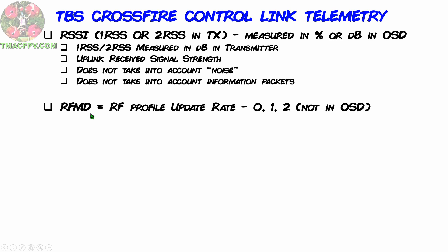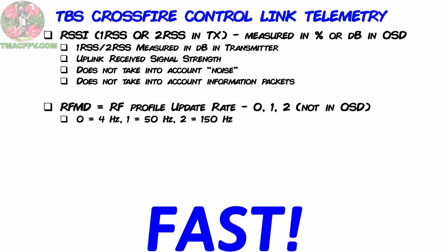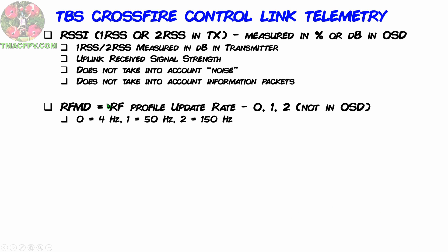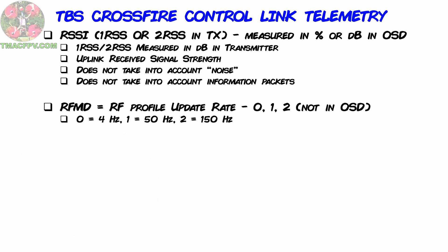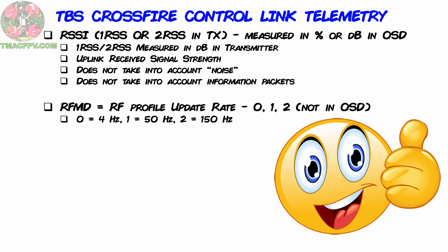RFMD is a Crossfire telemetry value which can be 0, 1, or 2. This is not available in your OSD but is accessible in your transmitter. The value indicates three different levels of update rate: an RFMD of 2 is the fastest at 150 Hz with the lowest latency between stick inputs and your quadcopter's reactions. An RFMD of 1 updates at 50 Hz with more latency yet has longer range than RFMD 2. An RFMD of 0 only updates at 4 Hz and is used for extreme long-range flights, only recommended for assisted flight modes using GPS. You need to ask yourself whether or not this telemetry value is of any use to you — I will point out shortly when you do need to know what update rate is currently in use.